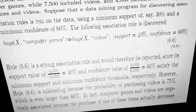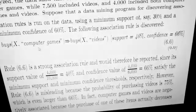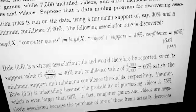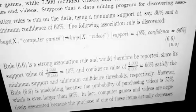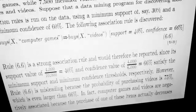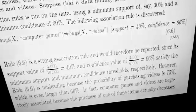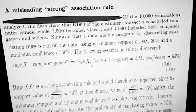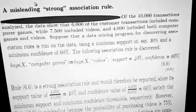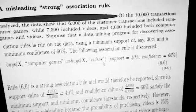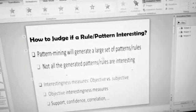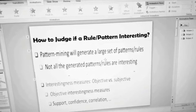So again there is a contradiction — the rule says the items should be related, but if we look carefully, computer games and videos are actually negatively associated. The summary is that a strong association rule — one that looks strong by checking support and confidence values — is not always truly interesting. It can be misleading. Strong association rules do not necessarily generate interesting rules.